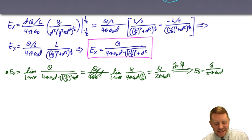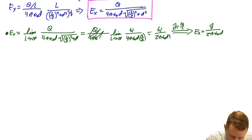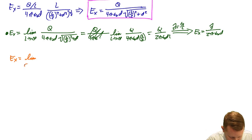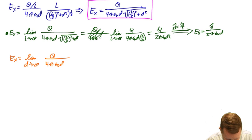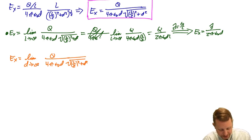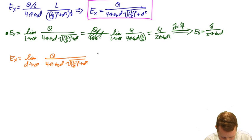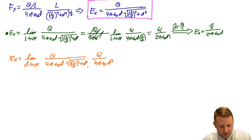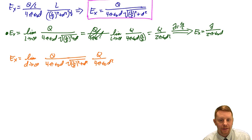What if the distance d is infinite? As d approaches infinity, E_x equals the limit as d→∞ of Q over 4πε₀d times √((L/2)² + d²). As d gets very large, the L becomes insignificant under the radical, so it approaches Q over 4πε₀d², which is just the electric field of a point charge — Q over 4πε₀r squared. So from far away, the wire acts like a point charge.